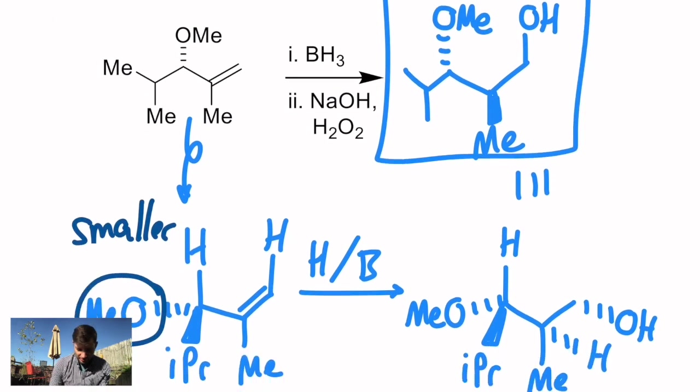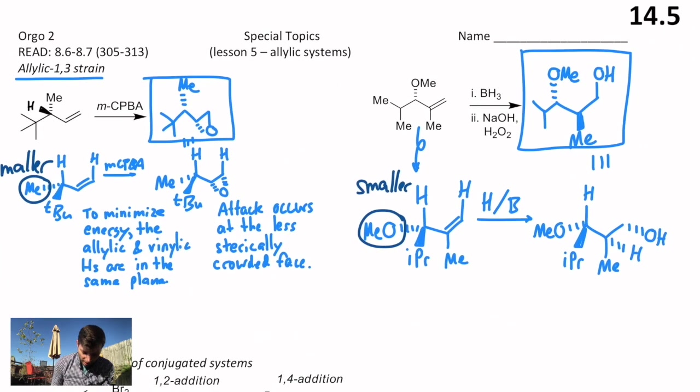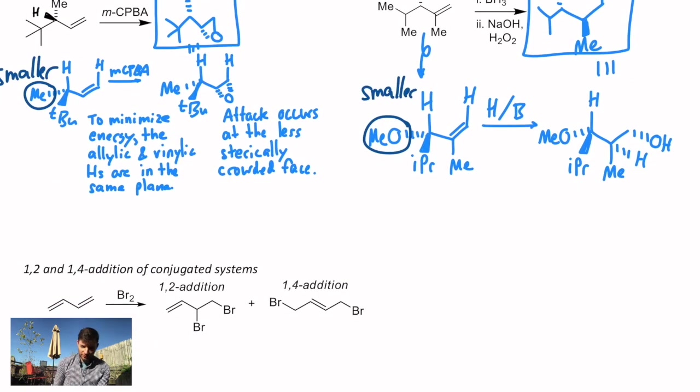Remember, you can specify the stereochemistry with just one of the groups on an sp3 carbon. Here, I'm showing that the H is back. Here, I'm showing that the methyl is forward. Those communicate the same information. It's sort of personal preference, which one you think looks a little more cleanly, but you should be able to interpret both. Okay, so that's it for allylic 1-3 strain, but I said in the beginning that we're going to look at a number of reactions from last semester and how they just sort of have different consequences when the molecules are a little more complicated.